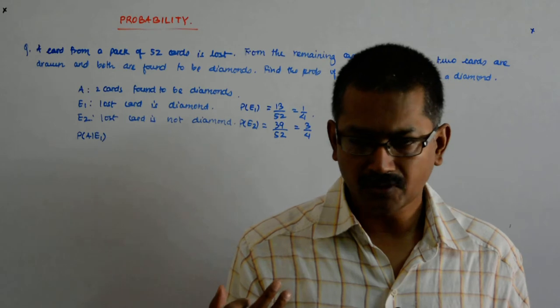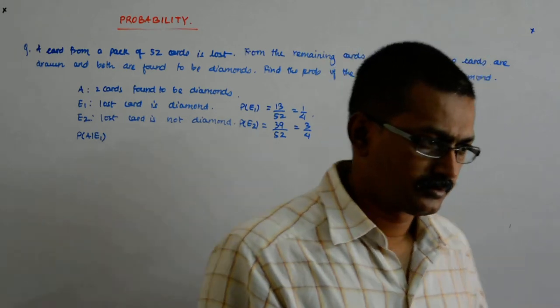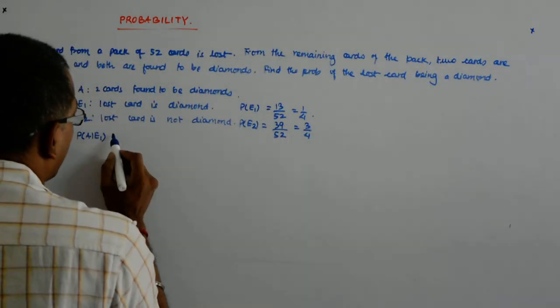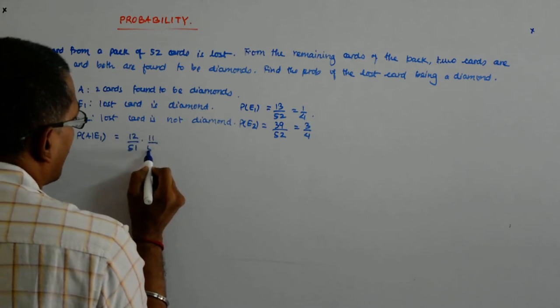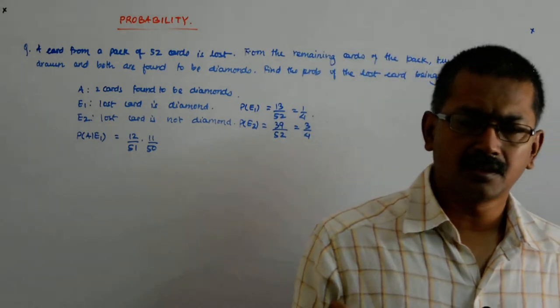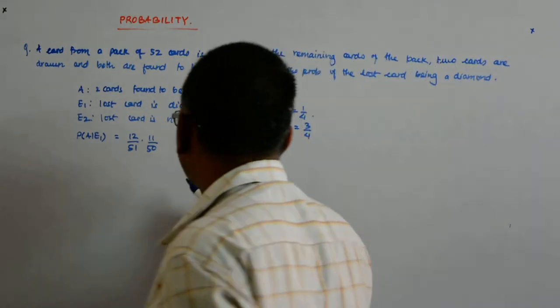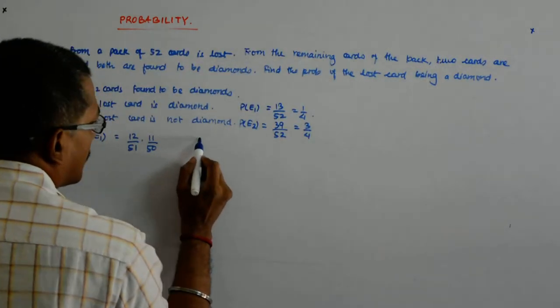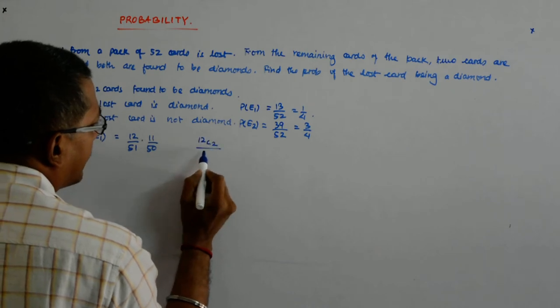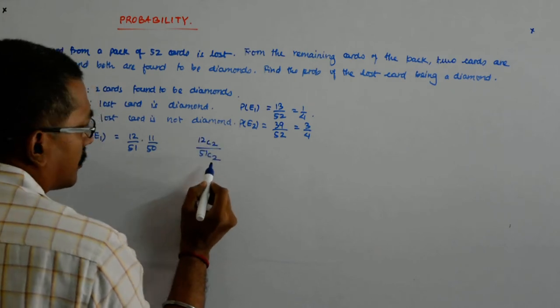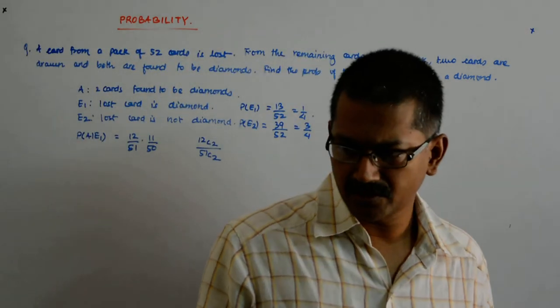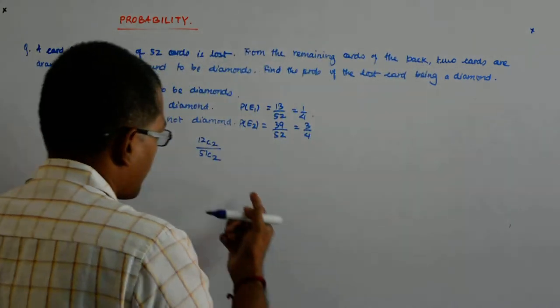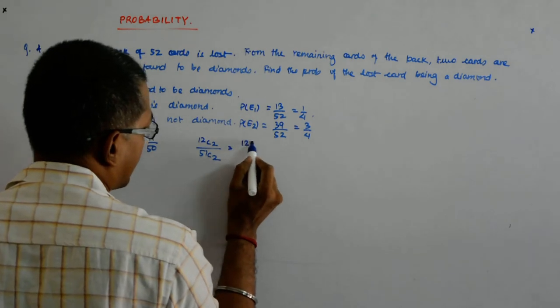So there are now 12 diamonds remaining. 12 upon 51 into 11 upon 50. Now there can be another approach - you can say 12 C2 divided by 51 C2. Any 2 out of the 12 diamonds combination, and what does that become?